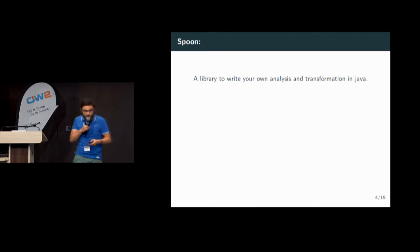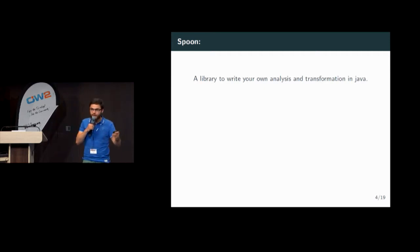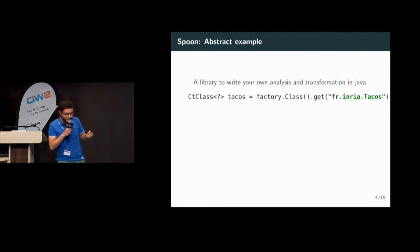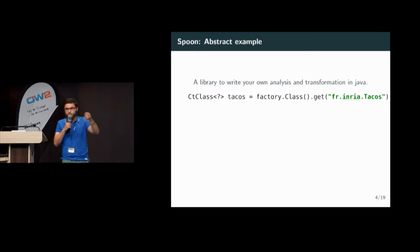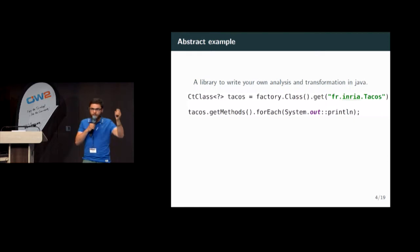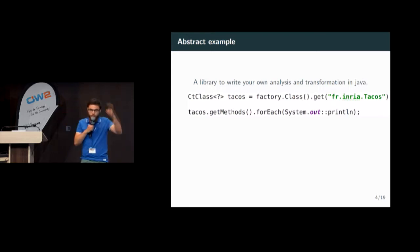Now I will go to an abstract example. I load my Java project and build my AST. First of all, I can retrieve one class — here, my Tacos class. I have this CtClass object which represents the node for the class Tacos. On this Tacos object, I can retrieve all the methods available and print them to the standard output, listing all the methods of the class Tacos.